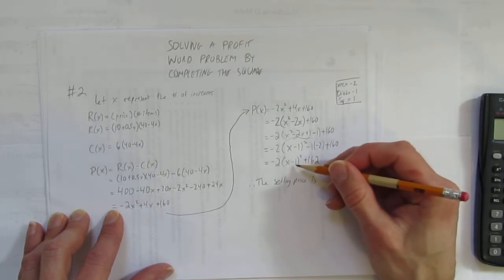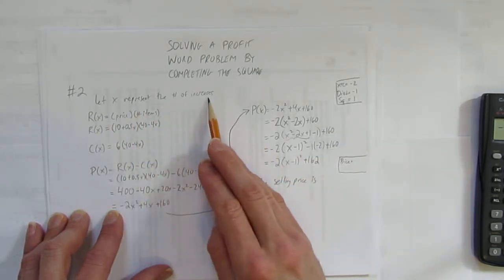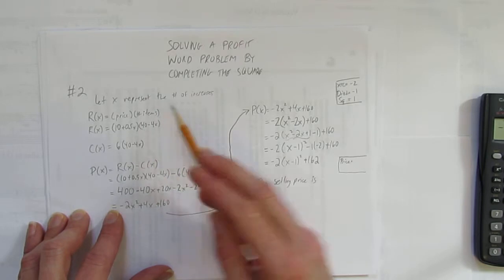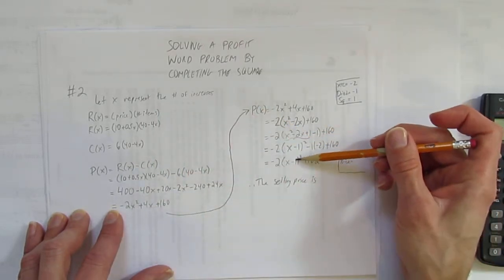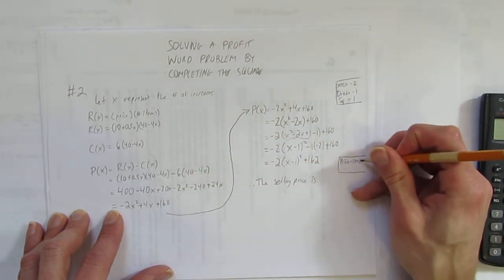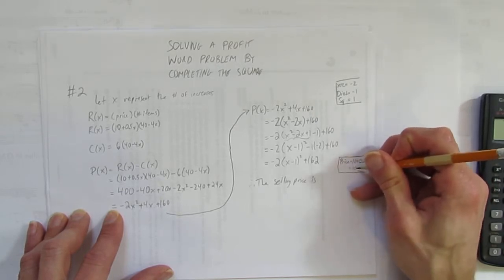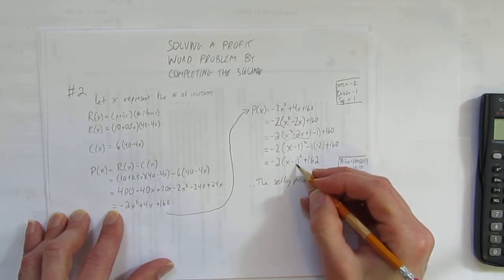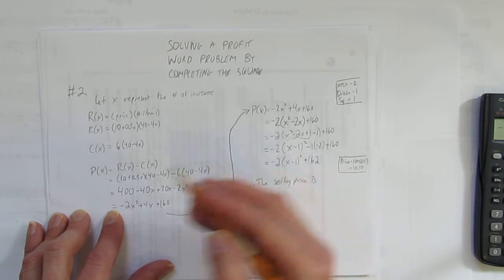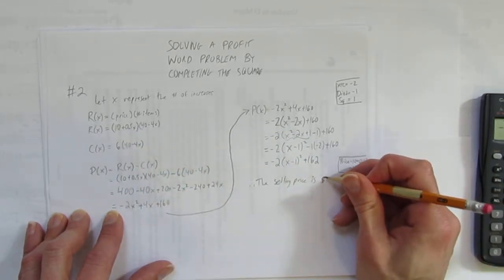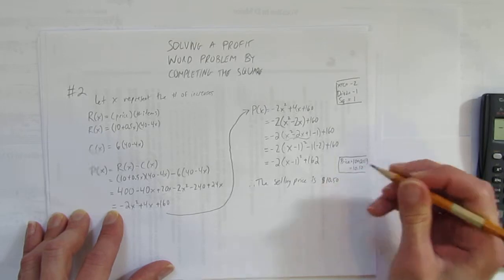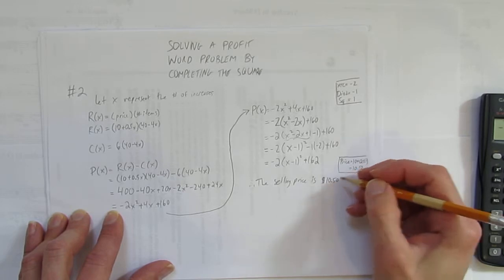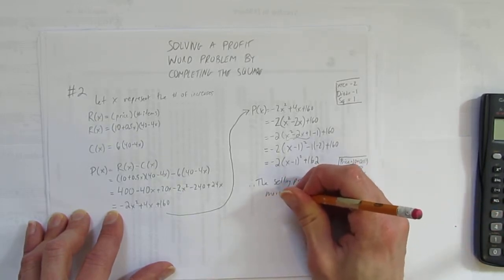But x value of the vertex is the number of increases. So we should have one price increase. Remember, the price started at 10 and goes up by 50 cents for each price increase. And the vertex here is at 1. So my price will be 10 plus 0.5 times 1, which gives me 10.50. So to maximize profit, I use this vertex x. I use this vertex x and I use it to calculate the price using my price value. The price to maximize profit is 10.50. So I'll write that the selling price is $10.50 to maximize profit.